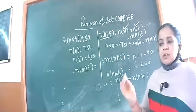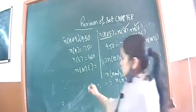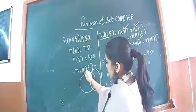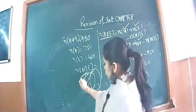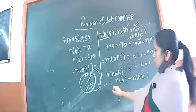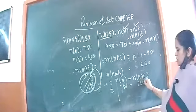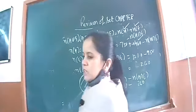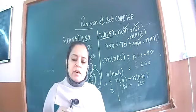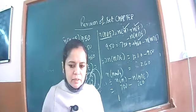In the Venn diagram, to find only H, I take the whole H minus the intersection. I know H is 750 and the intersection is 260, so only H equals 750 minus 260 equals 490. Similarly for only E: N(E) minus N(H intersection E). Is that clear to everyone? Any doubt?